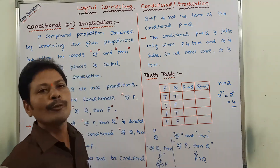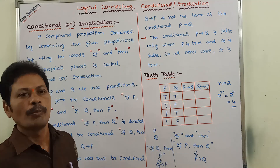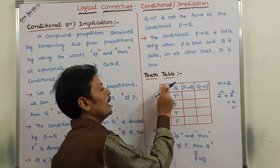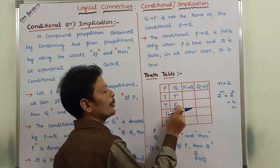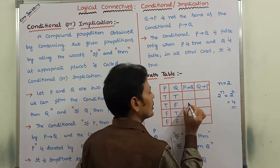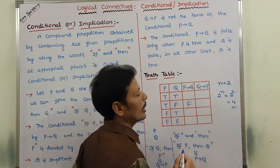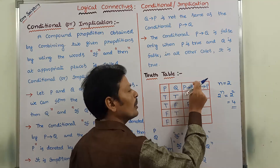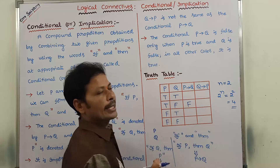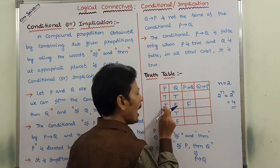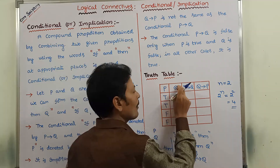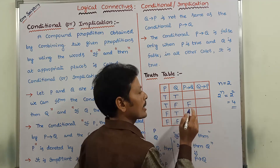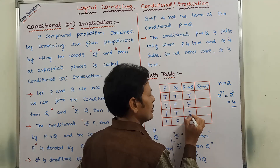What is the truth value of P Conditional Q? P Conditional Q is false when P value is true and Q value is false. In that case, the truth value of P Conditional Q is false. The truth value of P Conditional Q is false when truth value of P is true and truth value of Q is false. In the remaining three cases, P Conditional Q is true.